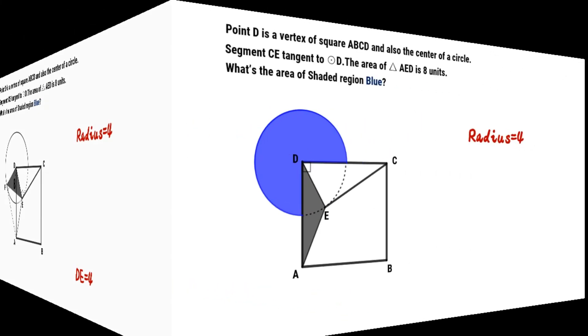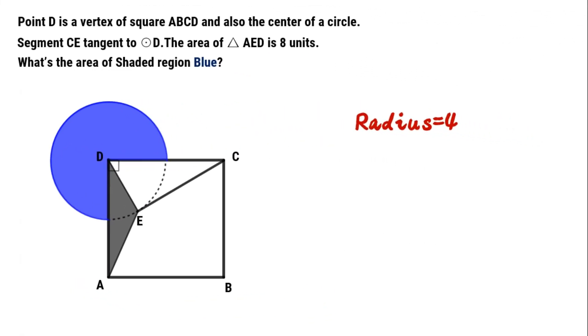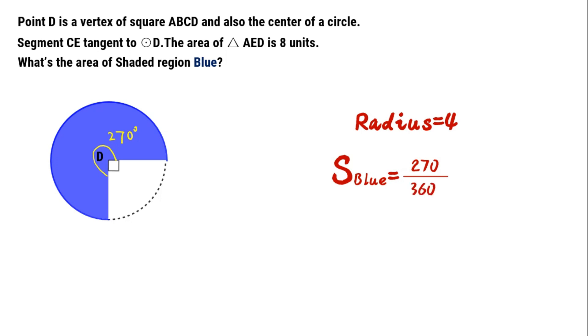Now, let's recall the shaded region in blue. The angle of sector blue is 270 degrees. The radius is 4. So, we can calculate the area from this equation. The result is, shaded region area blue equals 12 times pi.